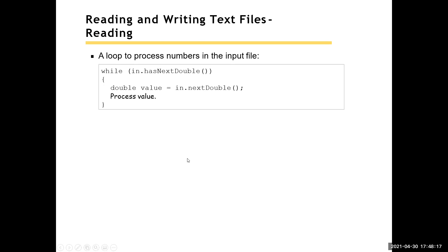One thing we can do — we've seen this before — is check to see if we have a double before we read it, so we don't get into any problems. The second part, we're going to talk about exceptions and how to handle those. If I don't have a double and I try to read a double, then we might end up with some issues.